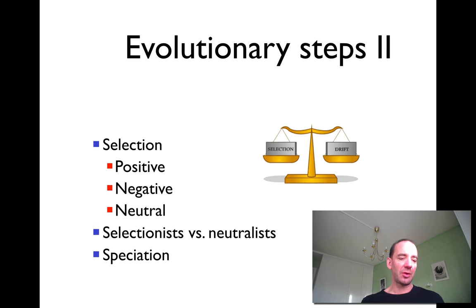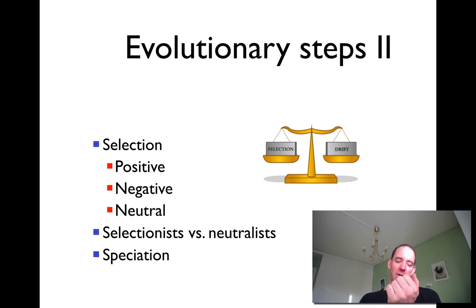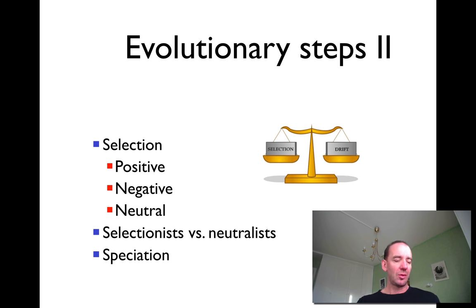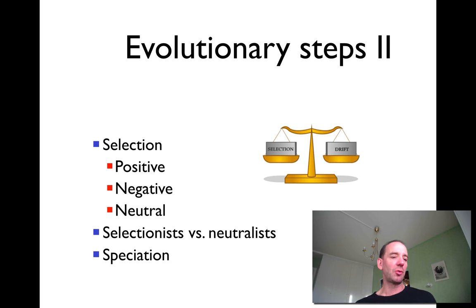Speciation is a whole area in phylogeny. It can occur, for instance, when two groups of animals get separated by space — like the famous finches in the Galapagos that Darwin found. They are separated on different islands, start evolving differently, and optimize different features. But it can also happen within the same population in the same space, where big animals mate with small ones, and after a while you have two separate groups.